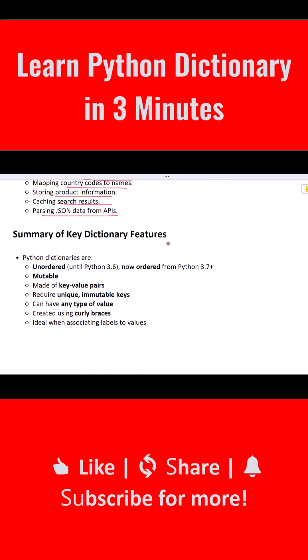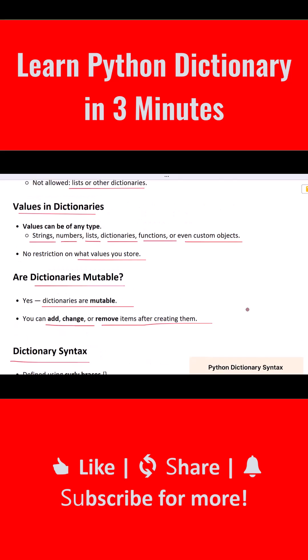Dictionaries help us organize data in a way that makes retrieval easy and fast. Let's wrap up with the key points. A Python dictionary is an unordered, mutable collection of key-value pairs. Keys must be unique and immutable. Values can be of any data type. Dictionaries are defined using curly braces. They are used when you want to associate one thing with another, like a label and a value.